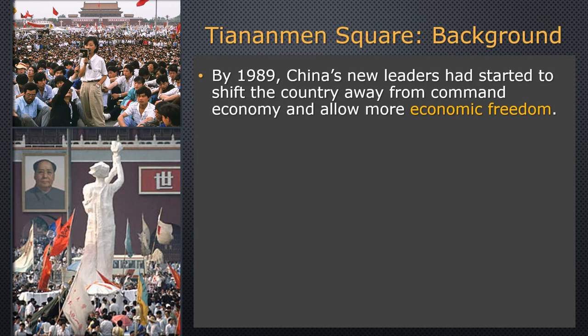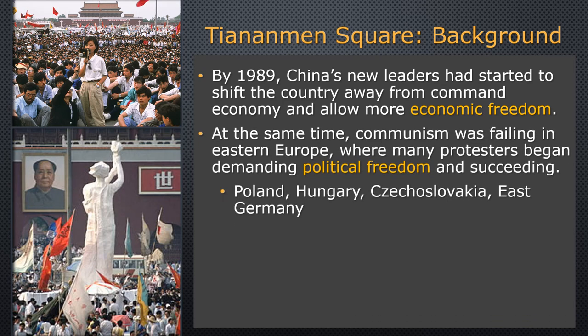The Cultural Revolution finally ended in 1976 when Mao died. Soon after, and into the 1980s, the new leaders of China — realizing what a failure the Great Leap Forward and the Cultural Revolution were — started to shift China's economy away from a command economy and more toward a market economy. They didn't shift to democracy, but they were shifting the economy. By 1989, there was a bit more economic freedom in China. At the same time, in Eastern Europe, communism was finally starting to fall in a few places, with people protesting and demanding more political freedom — and gaining some.